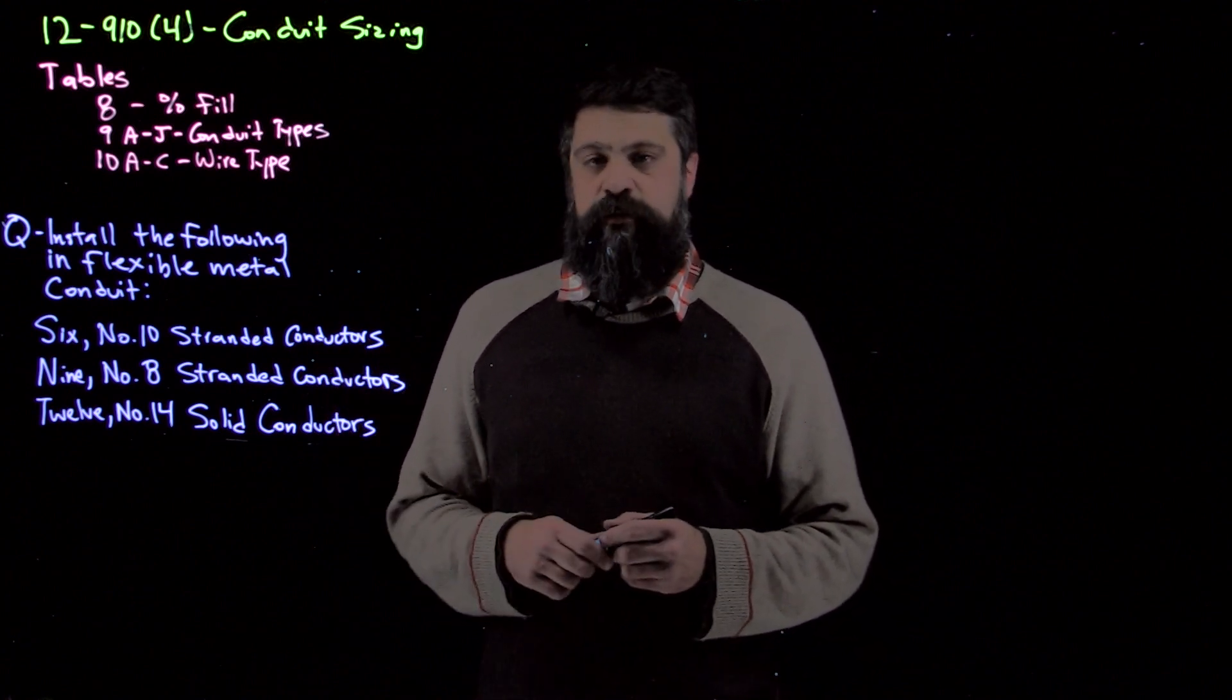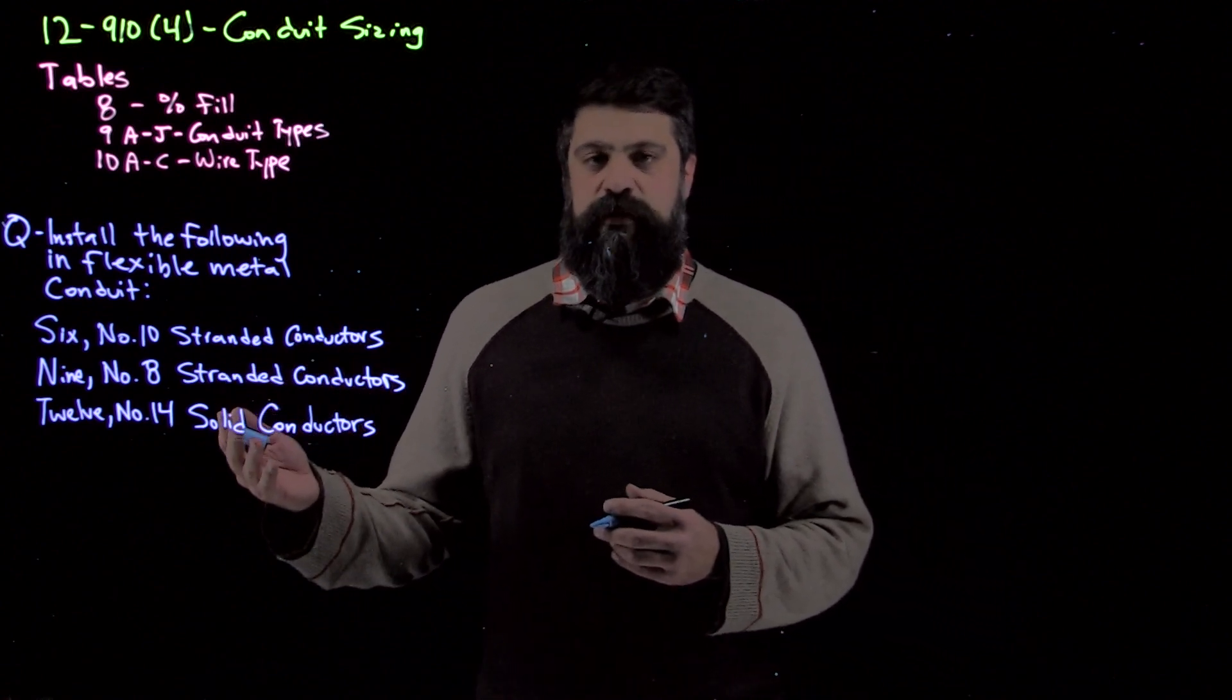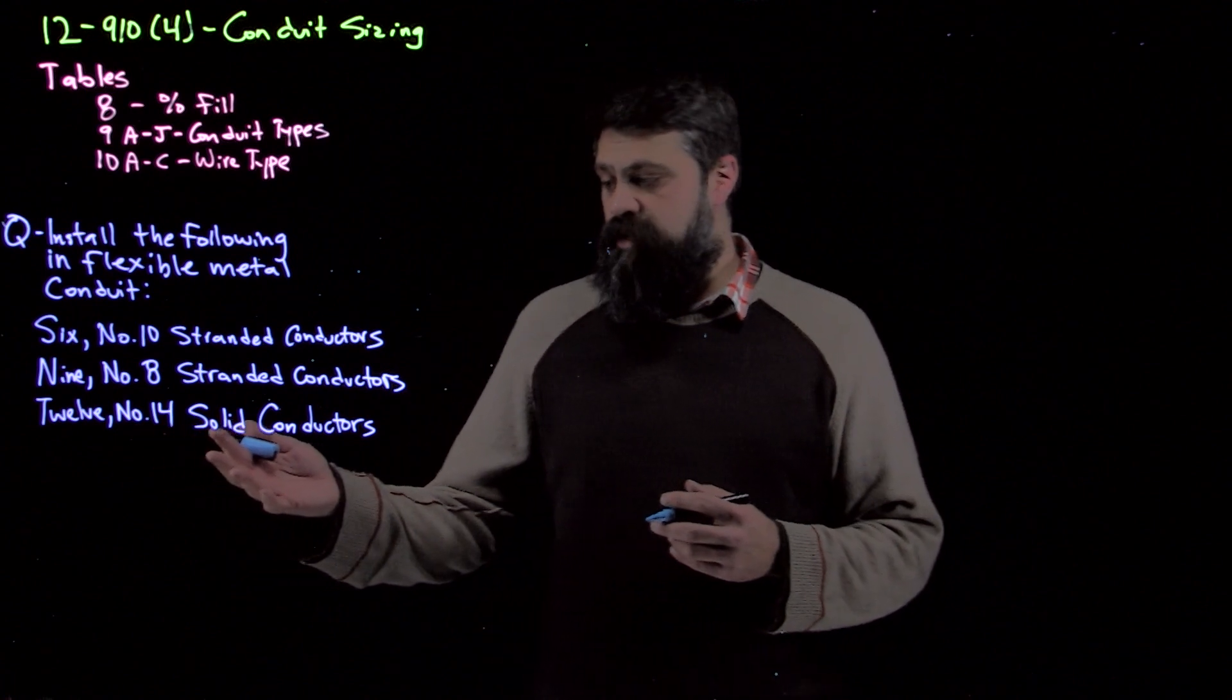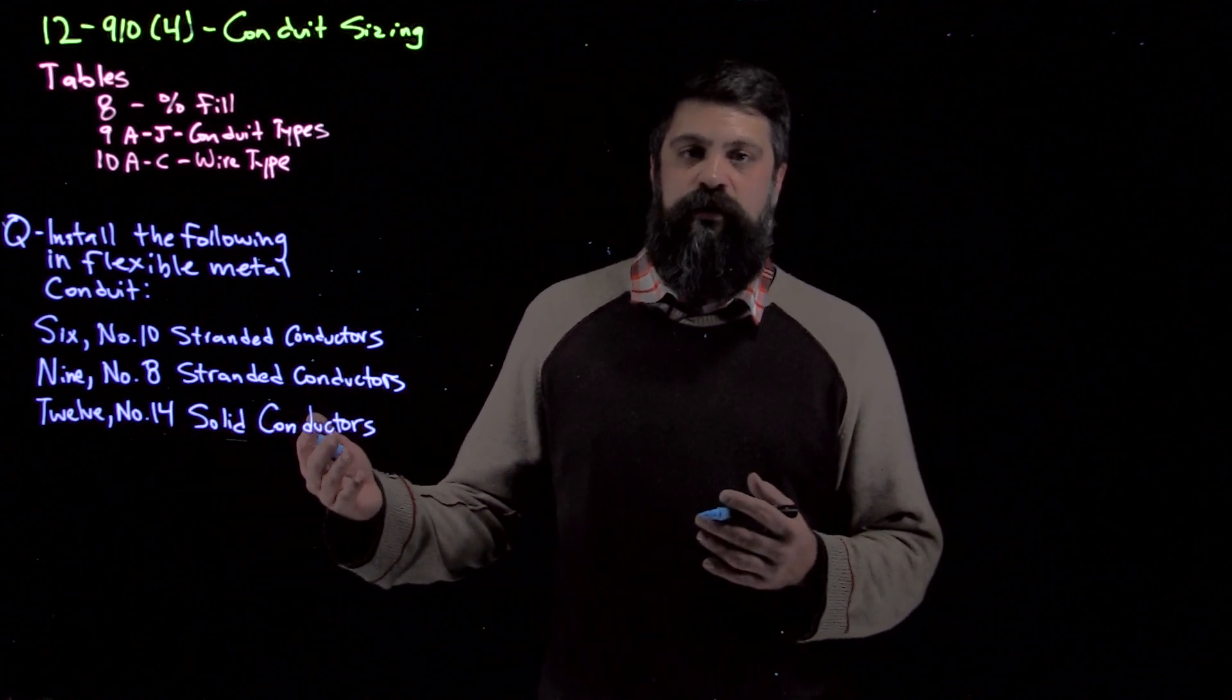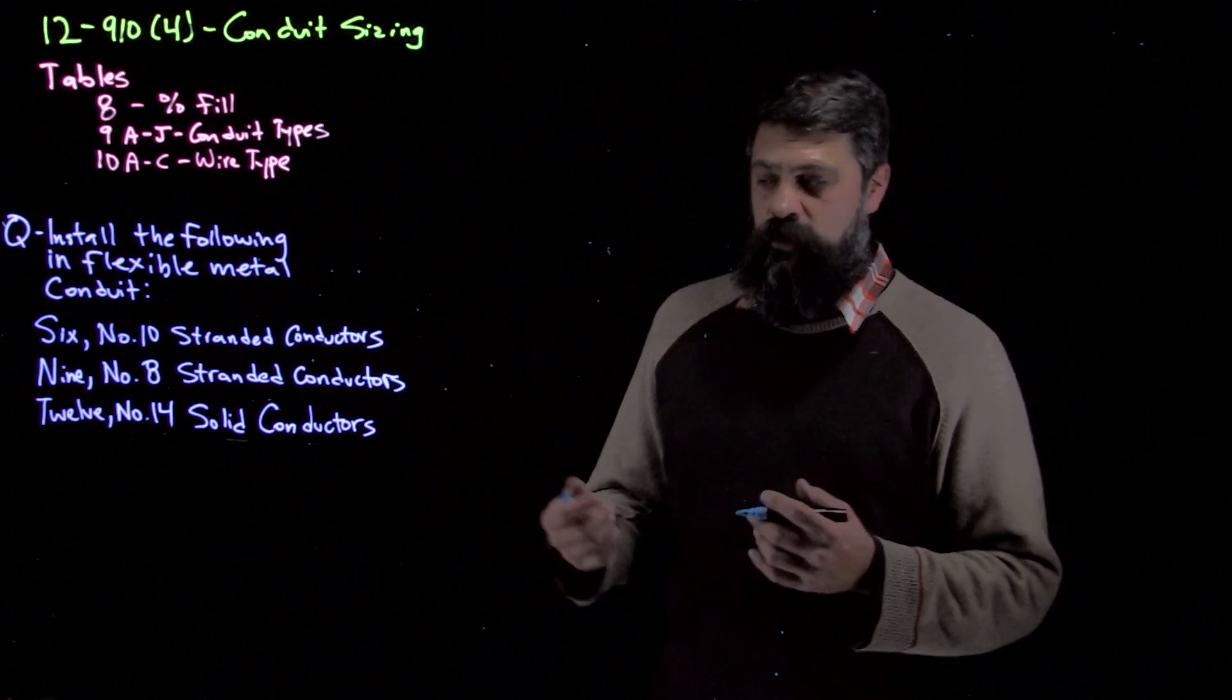The conduit we have is flexible metal conduit. So as we're going through this, not only do we have stranded, we need to know what the insulation type is on our wire as well. It's not stated in the question, so we know that we default to RW90XLPE. So as we're looking through the tables, that's the column we're going to look for.